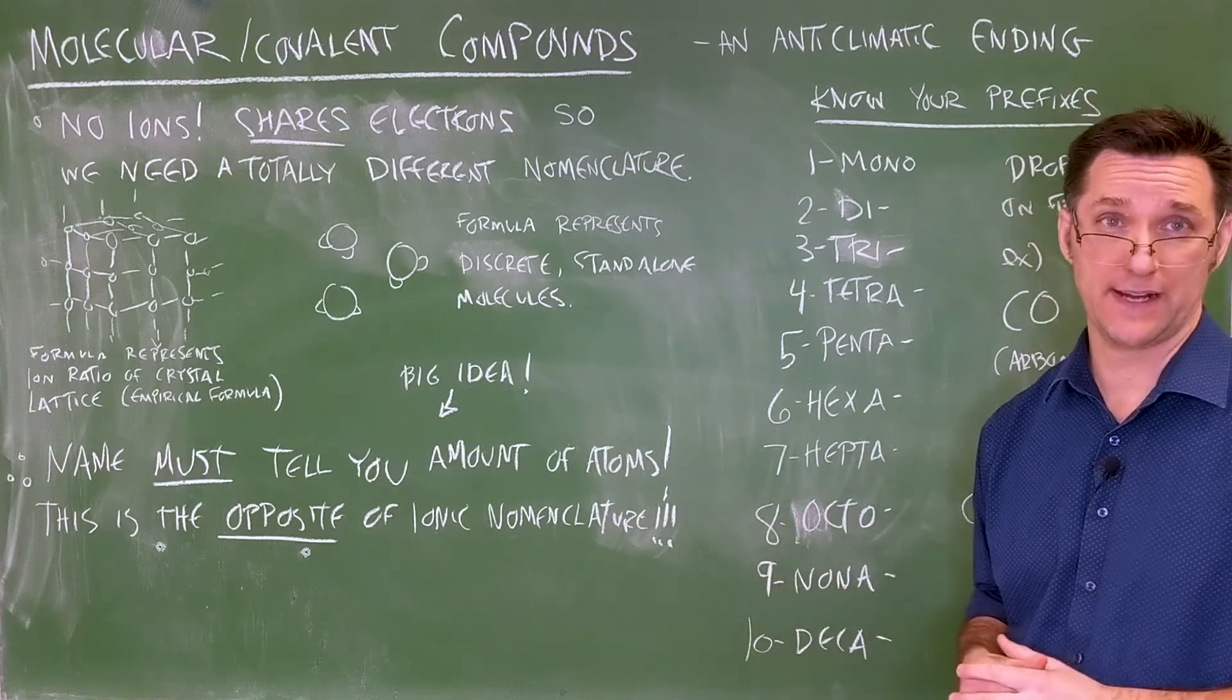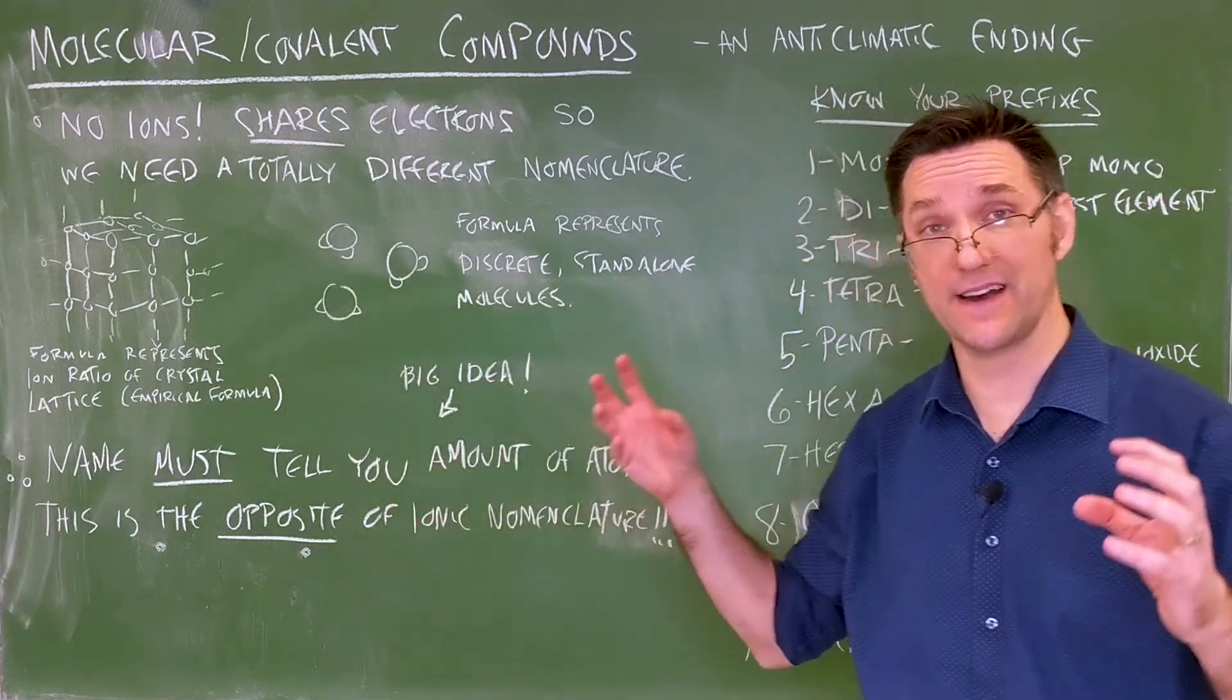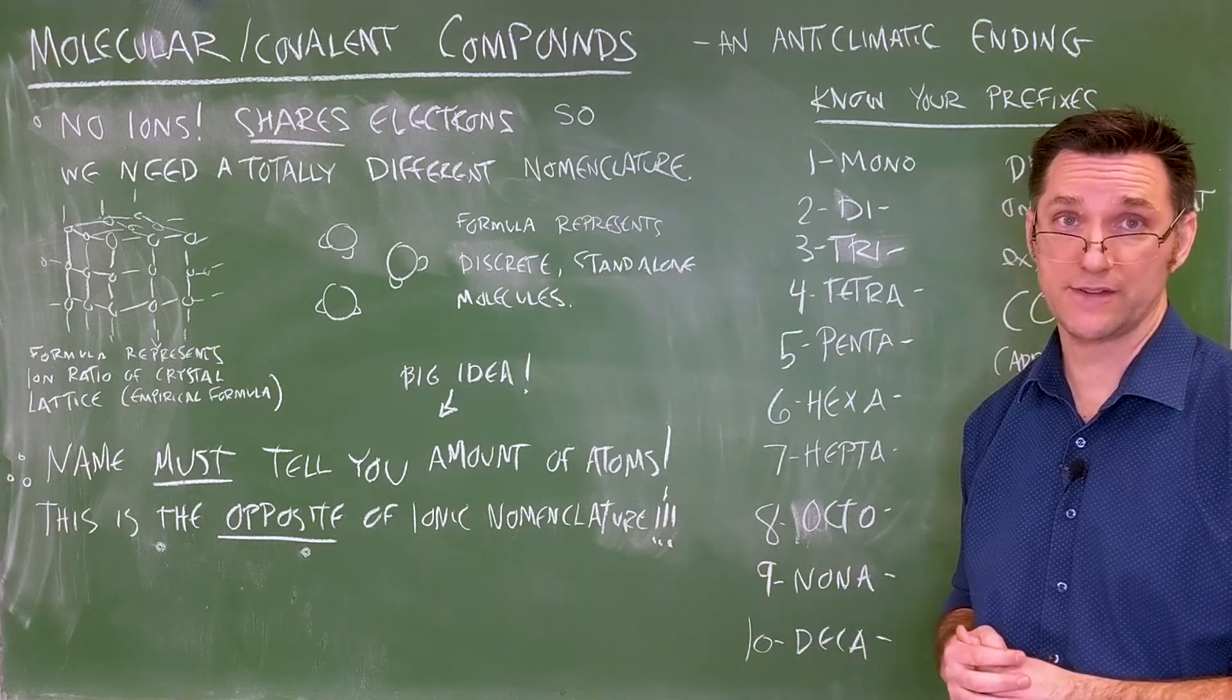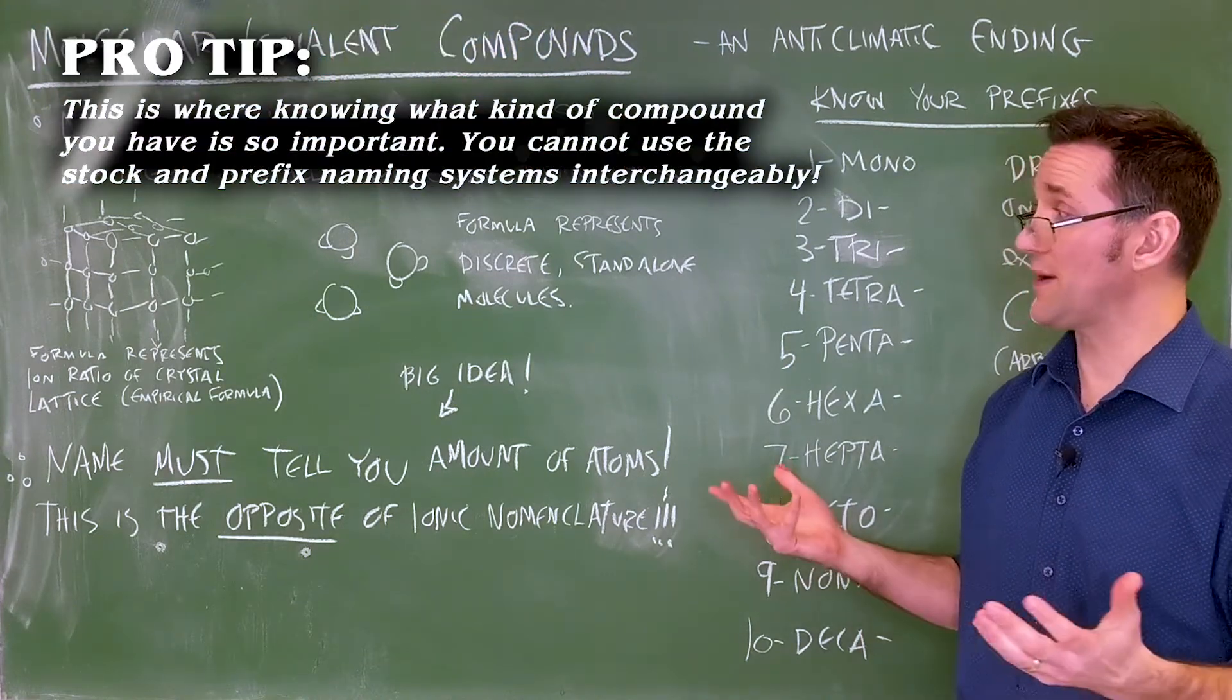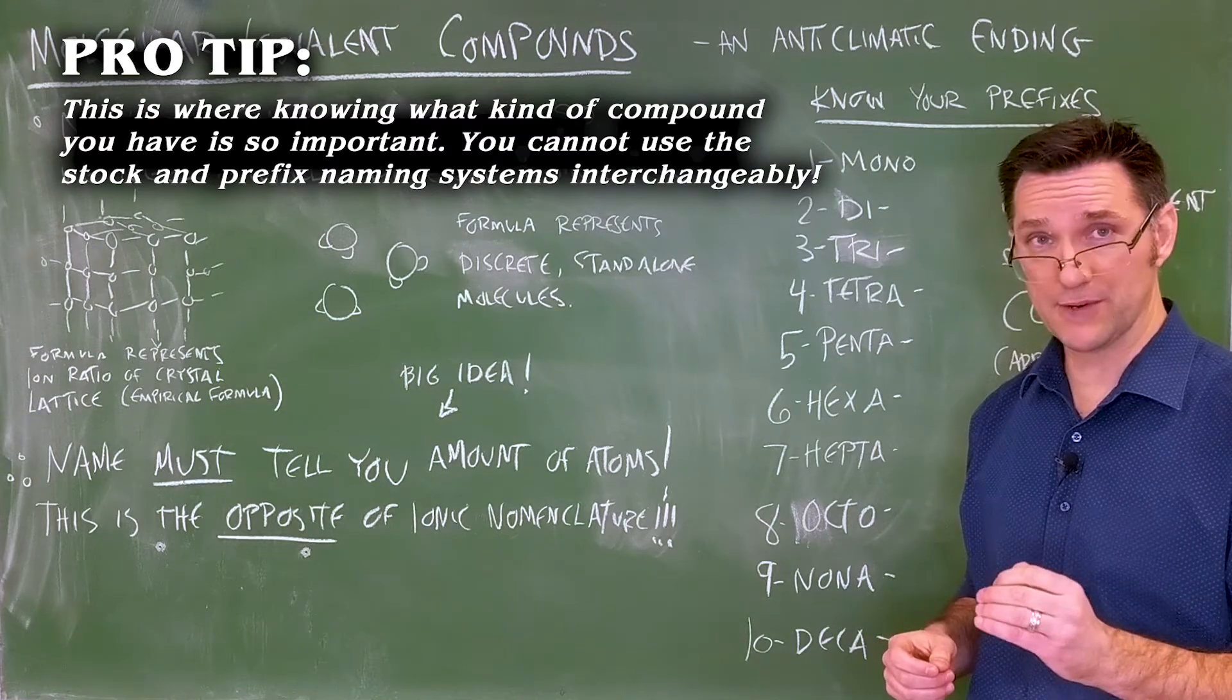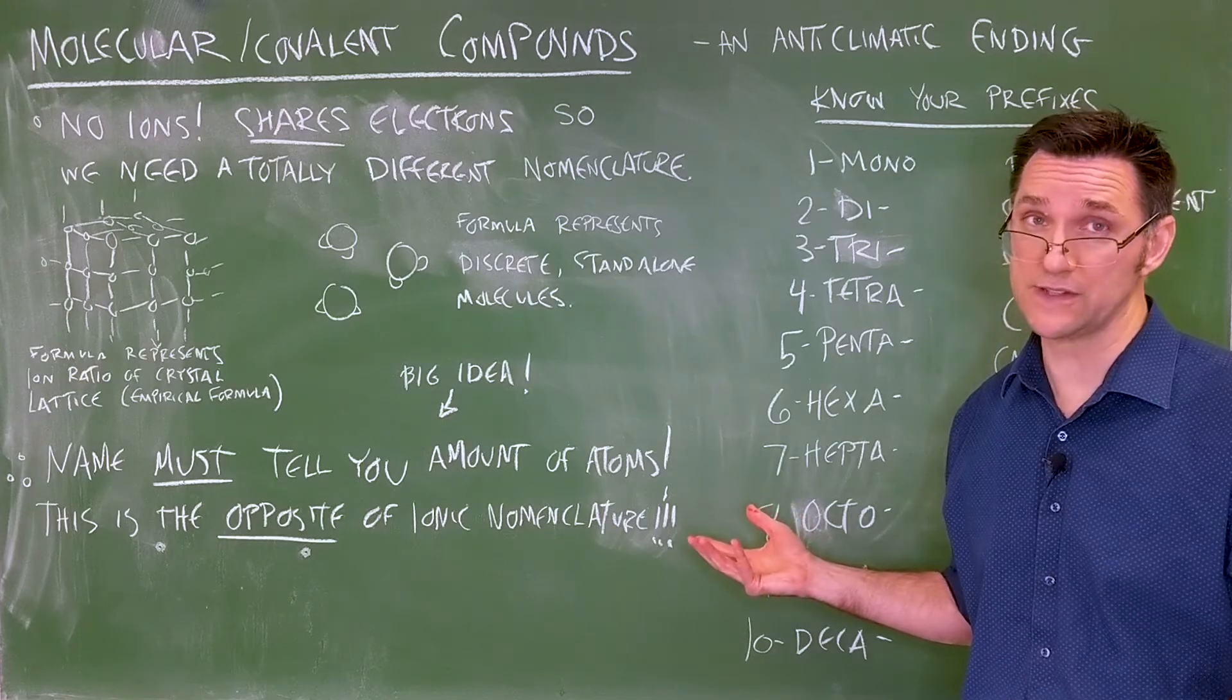Hey, congratulations. We're at the anti-climatic ending of nomenclature, and that's just the idea of molecular covalent compounds. The most important thing to understand about molecular compounds is they are radically different than ionic compounds. Covalent compounds share their way to a full outer shell, so there are no ions. They exist as discrete, independent molecules. The exact opposite rule is true with molecular compounds. We never tell you the charge because there is no charge.